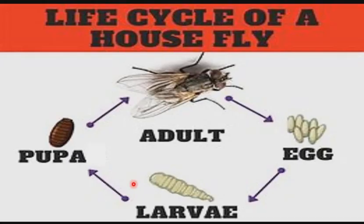Let's look at the life cycle of a housefly as an example of complete metamorphosis. Immediately after mating, it takes about two to three days for fertilized eggs to be laid. The laying of eggs always takes place in daylight, during which the female alights on material to which it is attracted, such as decomposing matter or organic matter like human or animal feces. The eggs are laid in batches of about 100 to 150 eggs.